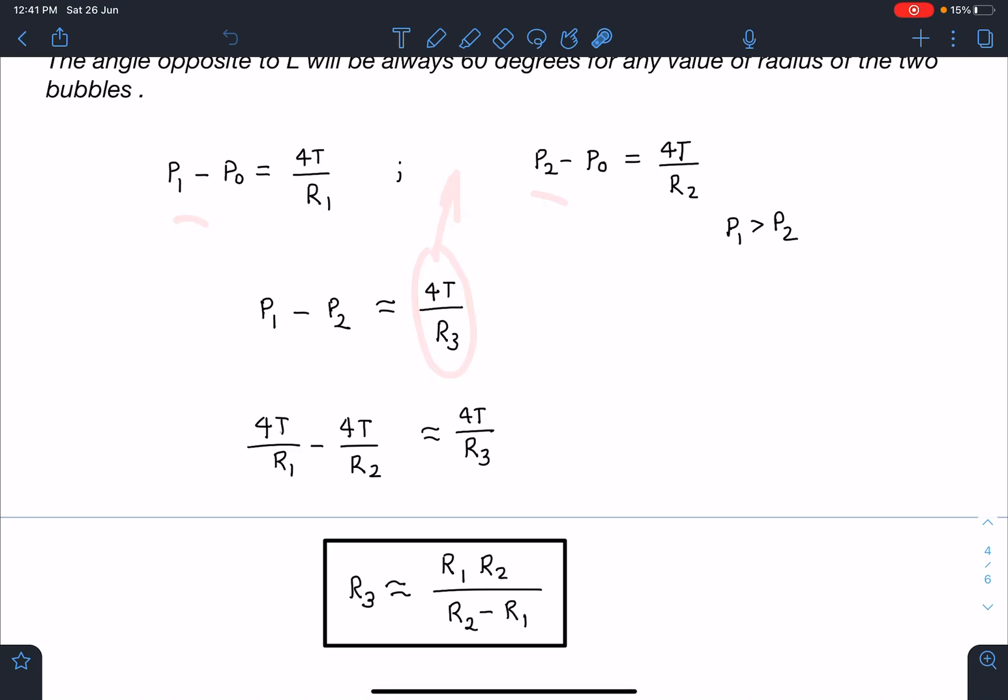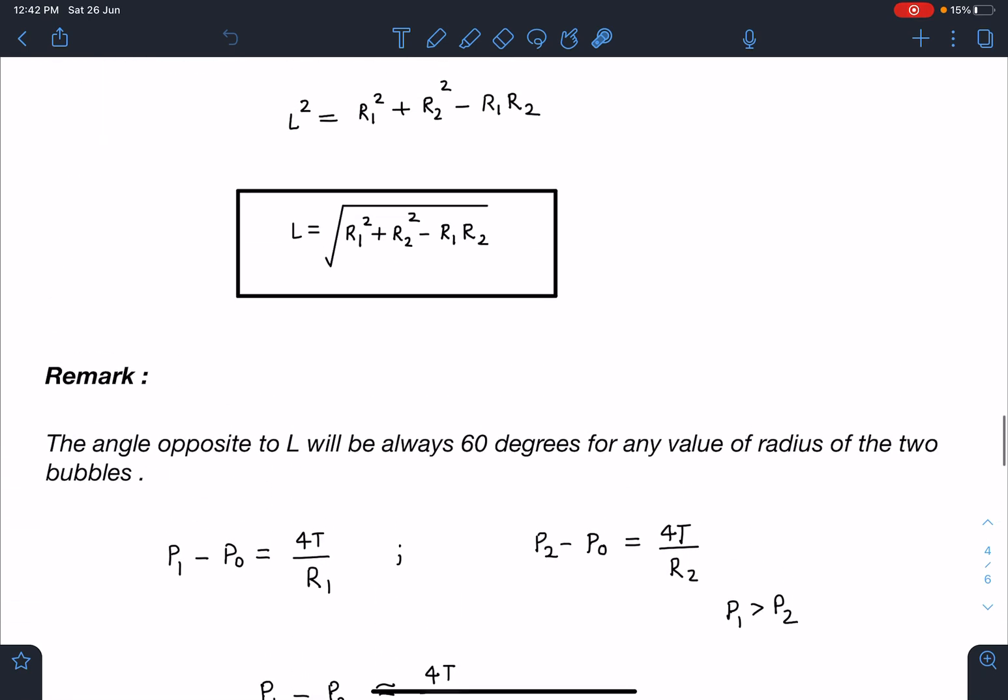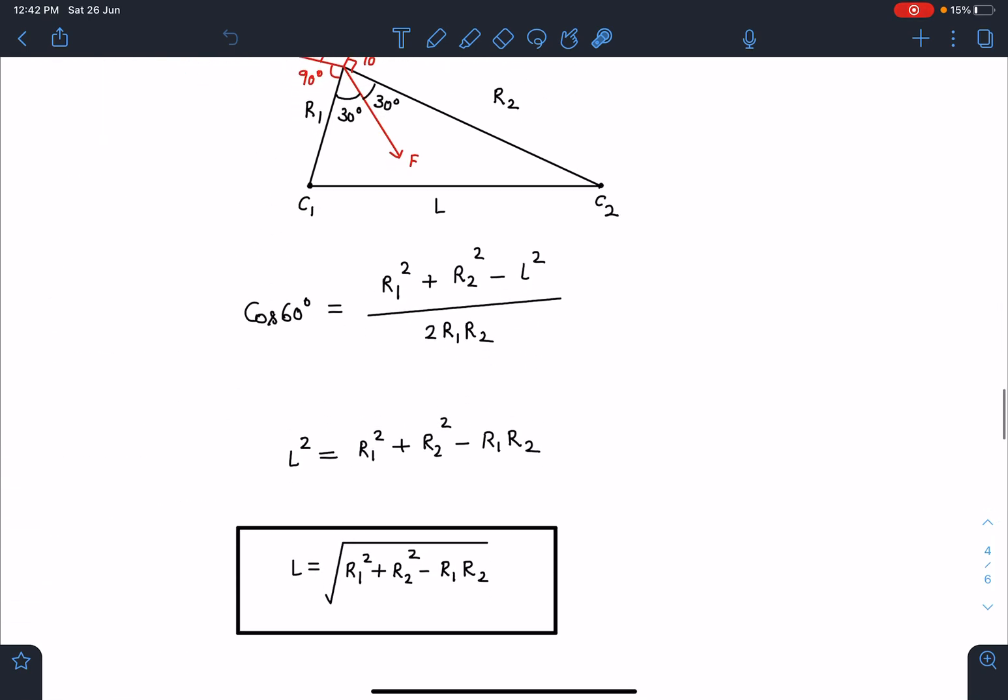Now I can substitute the value of P1 minus P2 from the first one, and if we simplify now we are going to get this: R3 is approximately equal to R1R2 by R2 minus R1. This is going to be the answer for the second part. But this question, the second problem is quite common problem, but this one is slightly rare. Not many questions you will see on this.